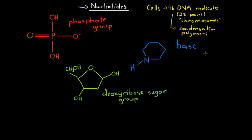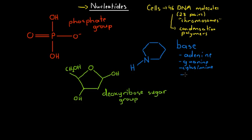There are four different types of bases that can exist in a nucleotide: adenine, guanine, cytosine, and thymine. Each of these four different bases has a different chemical structure. What I've drawn here for the structure of the base is just the generic part that is common to all of the base molecules.